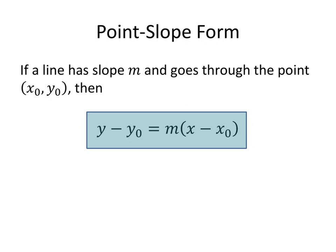So this is the form that you want to use when you're given a point and a slope. And hence, that's why we call it the point-slope form.